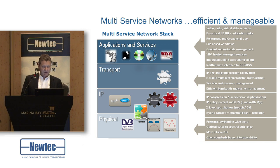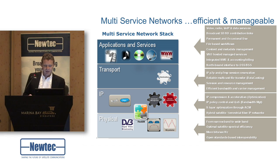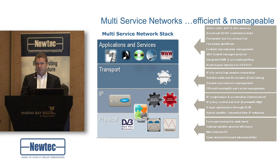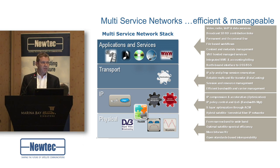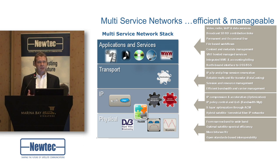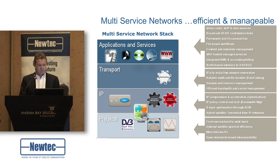But that's not all. If you look at the next layer on the protocol stack, you get into the IP layer. There we have a lot of opportunities to optimize traffic — IP compression, IP header compression, IP acceleration, quality of service, and bandwidth management. These are all technologies that are available to make the network more efficient at the IP level.